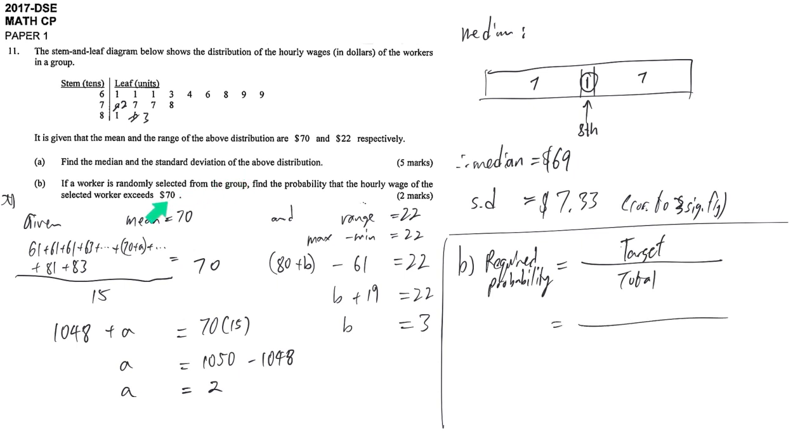So target, that means how many of them exceed 70. Start counting from here. We have 6 data fulfilled requirement, while in total we have 15 workers here. That's why you simplify your answer, 2 over 5. It's the answer.